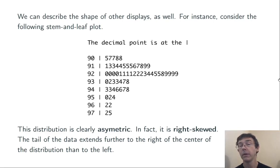If we were to draw a histogram, we would see the tail extending further to the right than to the left. Therefore, we say that this distribution is skewed to the right, or that it's right skewed.